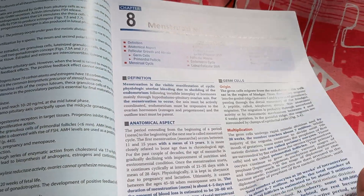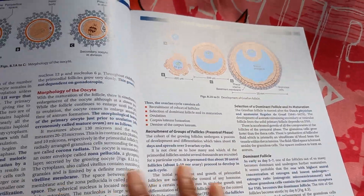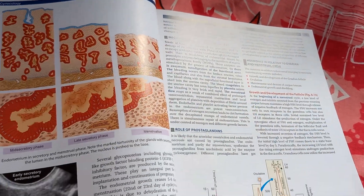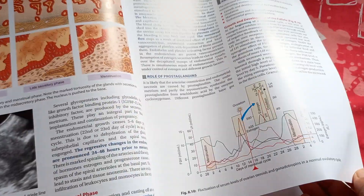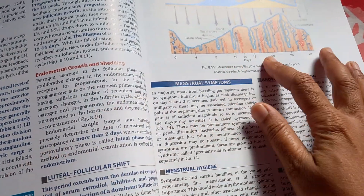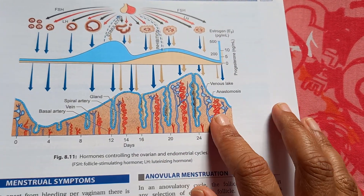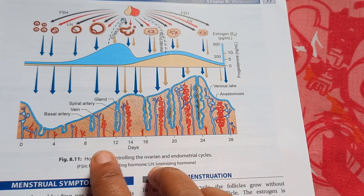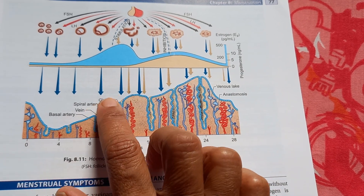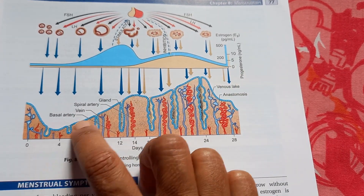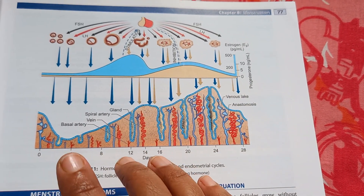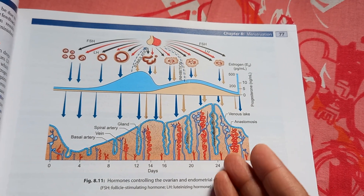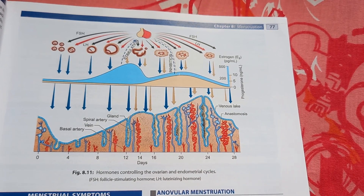There is a section on menstruation. You should know everything about the menstrual cycle — the complete cycle. This diagram shows what exactly is happening from day 0 to day 28: how the endometrium is changing, which is the proliferative phase, the secretory phase — all of that you should know.